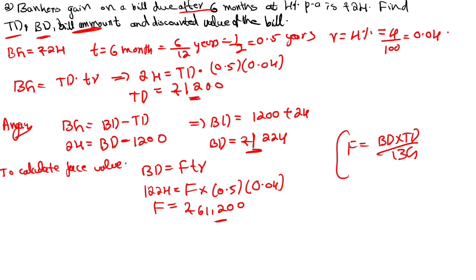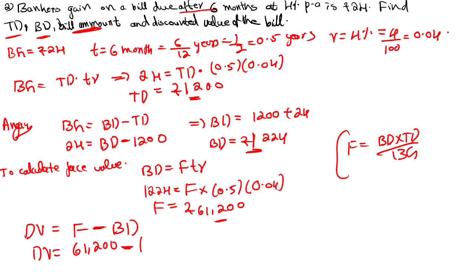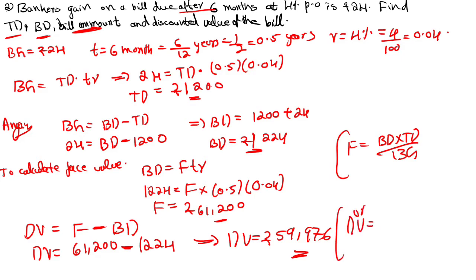Next, calculate discounted value. Discounted value DV equals F minus BD. So discounted value equals face value minus banker's discount: 61,200 minus 1224. This implies discounted value equals rupees 59,976. Alternatively, you can apply the formula F × (1 minus t×r) and you will get the same answer.